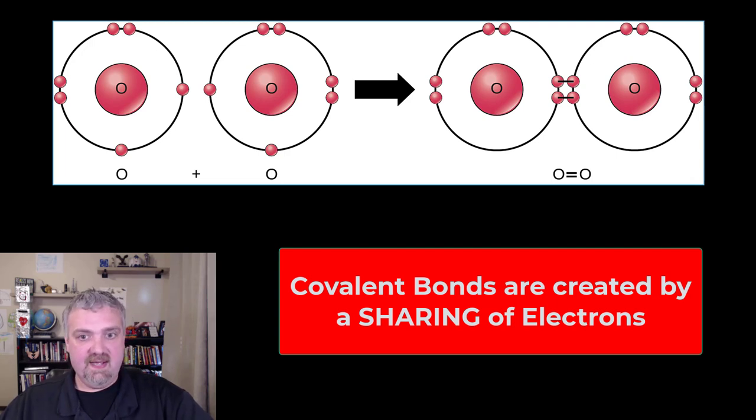Now we are going to talk about covalent bonds. They are created by a sharing of electrons. So it is a mutually beneficial relationship. These two covalently bonded atoms are intimately connected which is why these bonds are going to be stronger than ionic bonds.